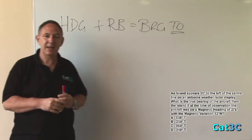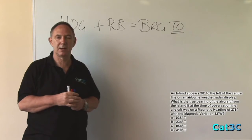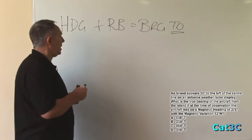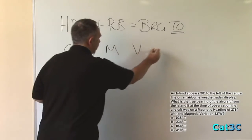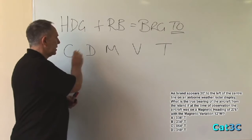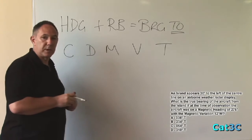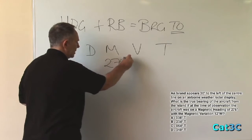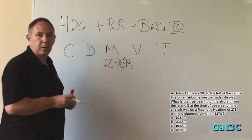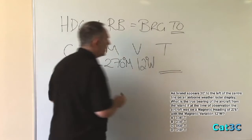Now, you will notice that the heading that we have at the moment is a magnetic heading of 276 degrees magnetic. Therefore, we need to convert this into a true heading. To do this, we go back to Cadbury's dairy milk, very tasty. Or compass, deviation, magnetic, variation, true. What do we know? What are we looking for? We know that the magnetic heading is 276 magnetic. We know that the variation is 12 degrees west, and we're trying to find the true heading.